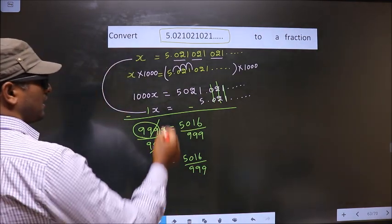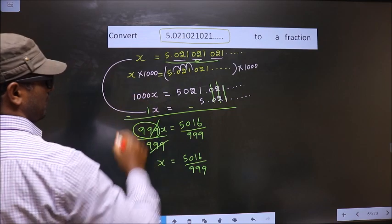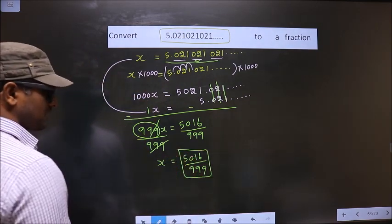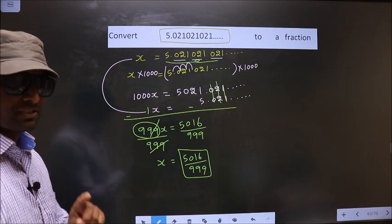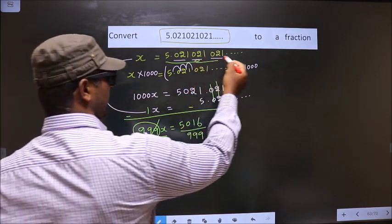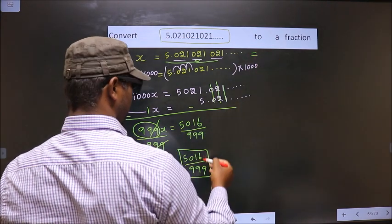Now, earlier we had taken the recurring decimal equal to x. Now we got a fraction equal to x. That implies only one thing: that